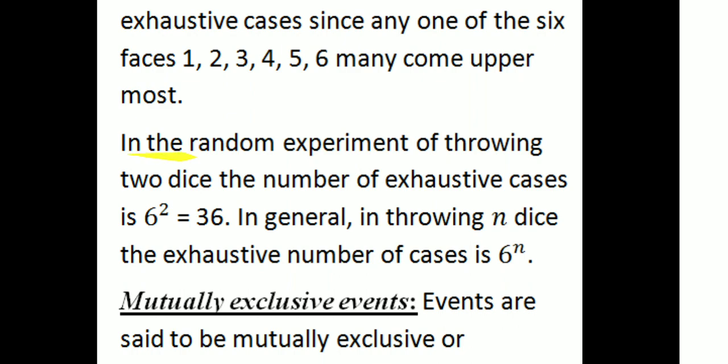In the random experiment of throwing two dice, the number of exhaustive cases is 6 squared, that is 36. In general, in throwing n dice, the exhaustive number of cases is 6 raised to the power n.